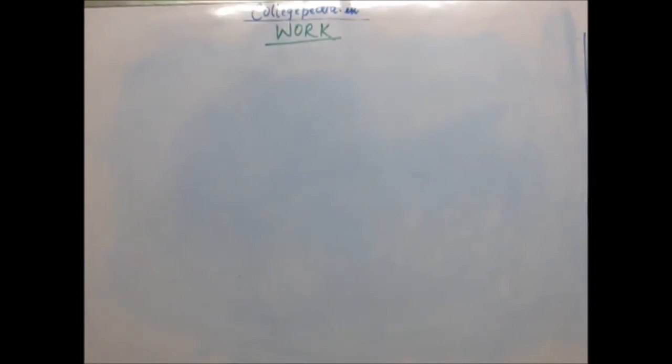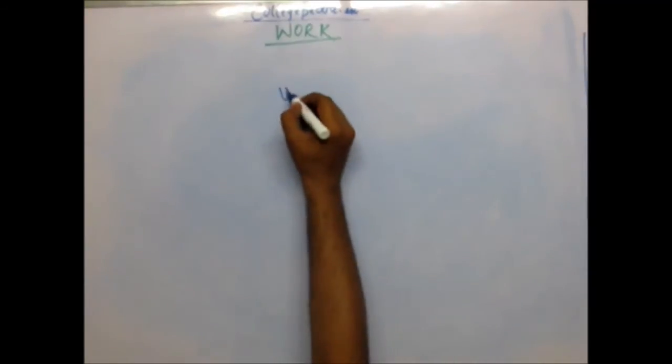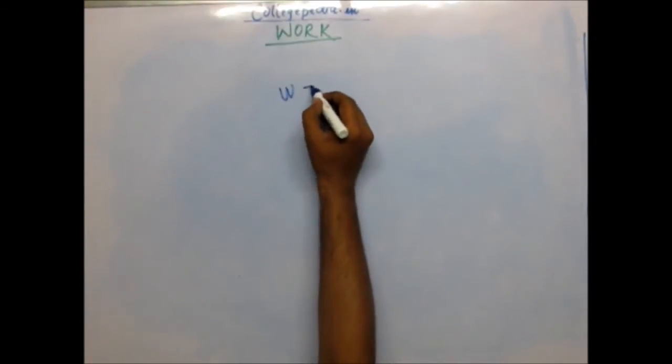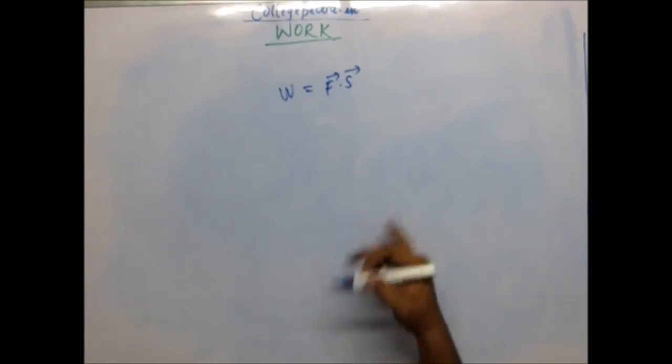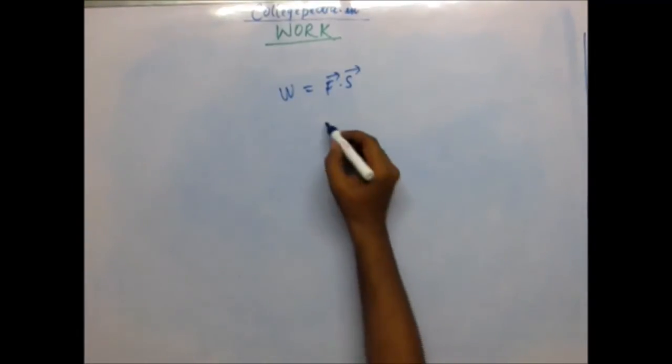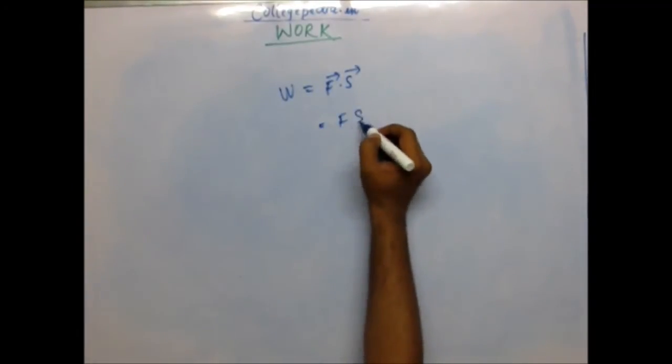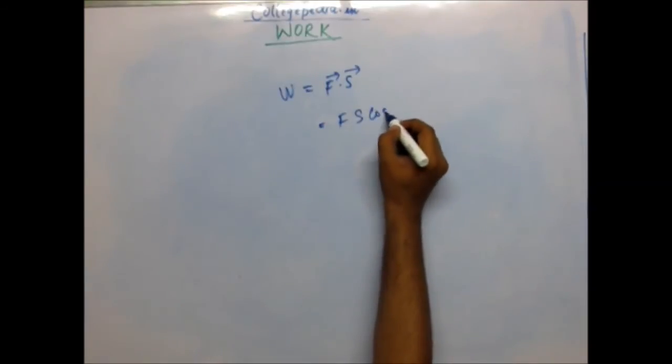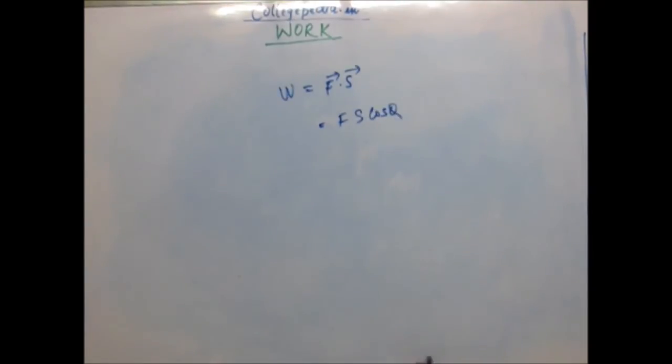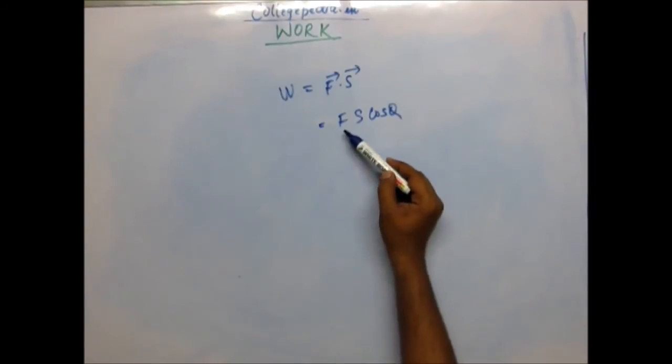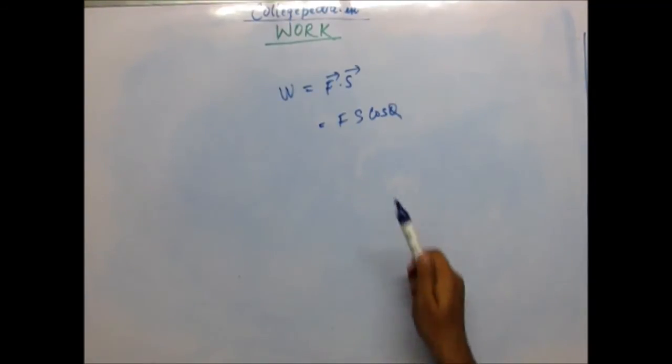This formula is very simple: F vector dot s vector. If you have to use this formula, force has to be constant. If force is changing throughout the journey, you cannot have one value of force, then this formula will not be useful.